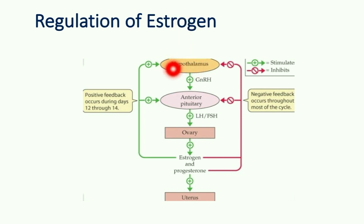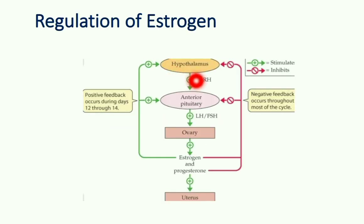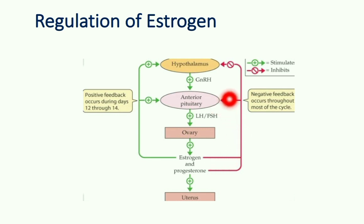Regarding regulation of estrogen, it has both positive and negative feedback effects over the pituitary and hypothalamus. Most of the time the feedback is negative. During the LH surge, estrogen has a positive feedback effect which causes more LH secretion. GnRH is released from the hypothalamus, which acts on the anterior pituitary causing secretion of FSH and LH, which act on the ovary leading to secretion of estrogen. Estrogen in turn causes feedback inhibition over the anterior pituitary and hypothalamus, regulating its own level. That concludes today's discussion; the next topic will be the next ovarian hormone.